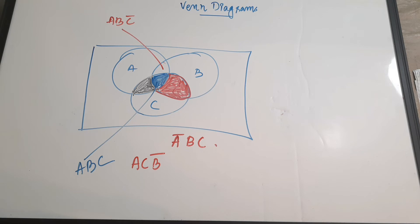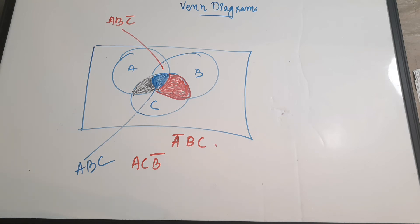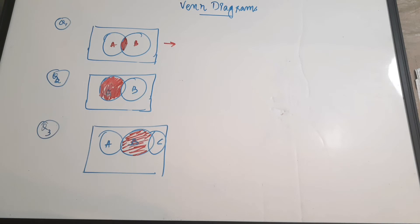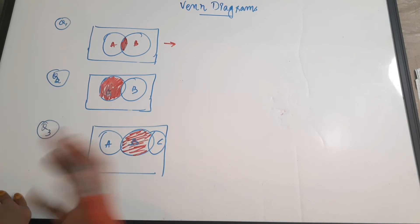You can see these three-variable Venn diagrams mostly in higher-end examinations like GATE exams and ISRO exams. You will be given some Venn diagrams and you need to find the expression for that diagram. These Venn diagrams are also included in digital logic and the digital electronics playlist. The questions are: write the logical expression for these shaded portions or these Venn diagrams.